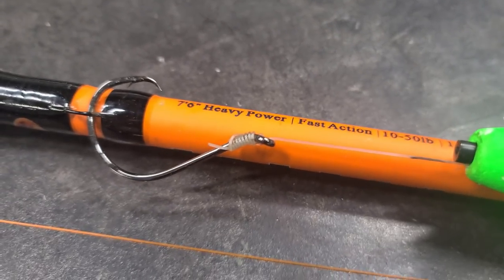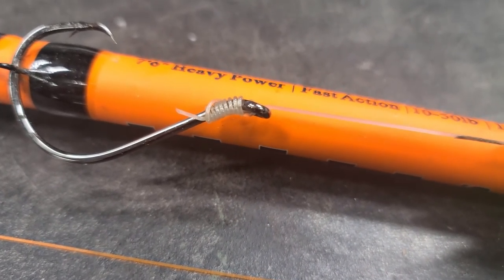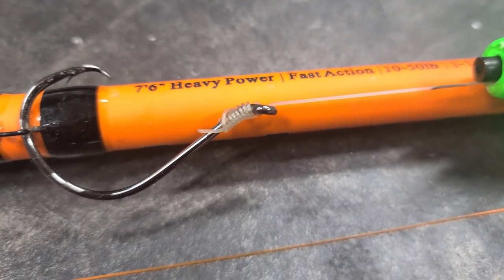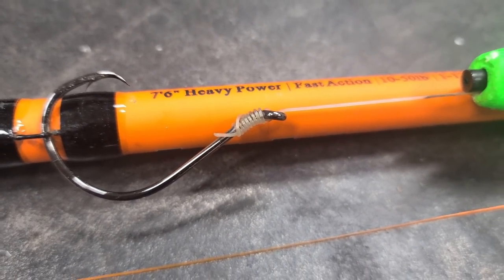Now here's an example of a snelled hook that I used a knotless knot on, and I've been using it for a while. They just don't come back loose. It's a really cool, strong knot. Those right there really are the knots I use the most, and they're really strong. They've never let me down.